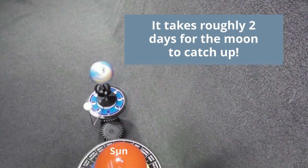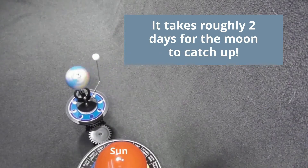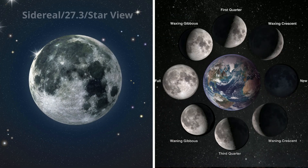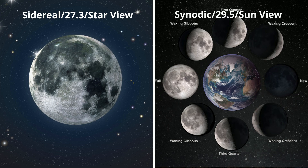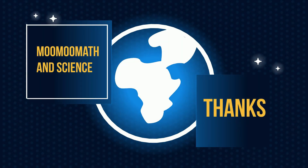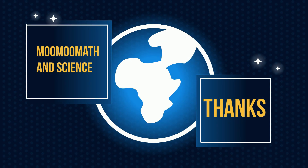This takes just two extra days to do so. In summary, the sidereal period is 27.3 days, which has a star as a reference, and the synodic period is roughly 29.5 days, with the sun as a reference. Thanks for watching — Moomoo Math uploads a new math and science video every day. Please subscribe and share.